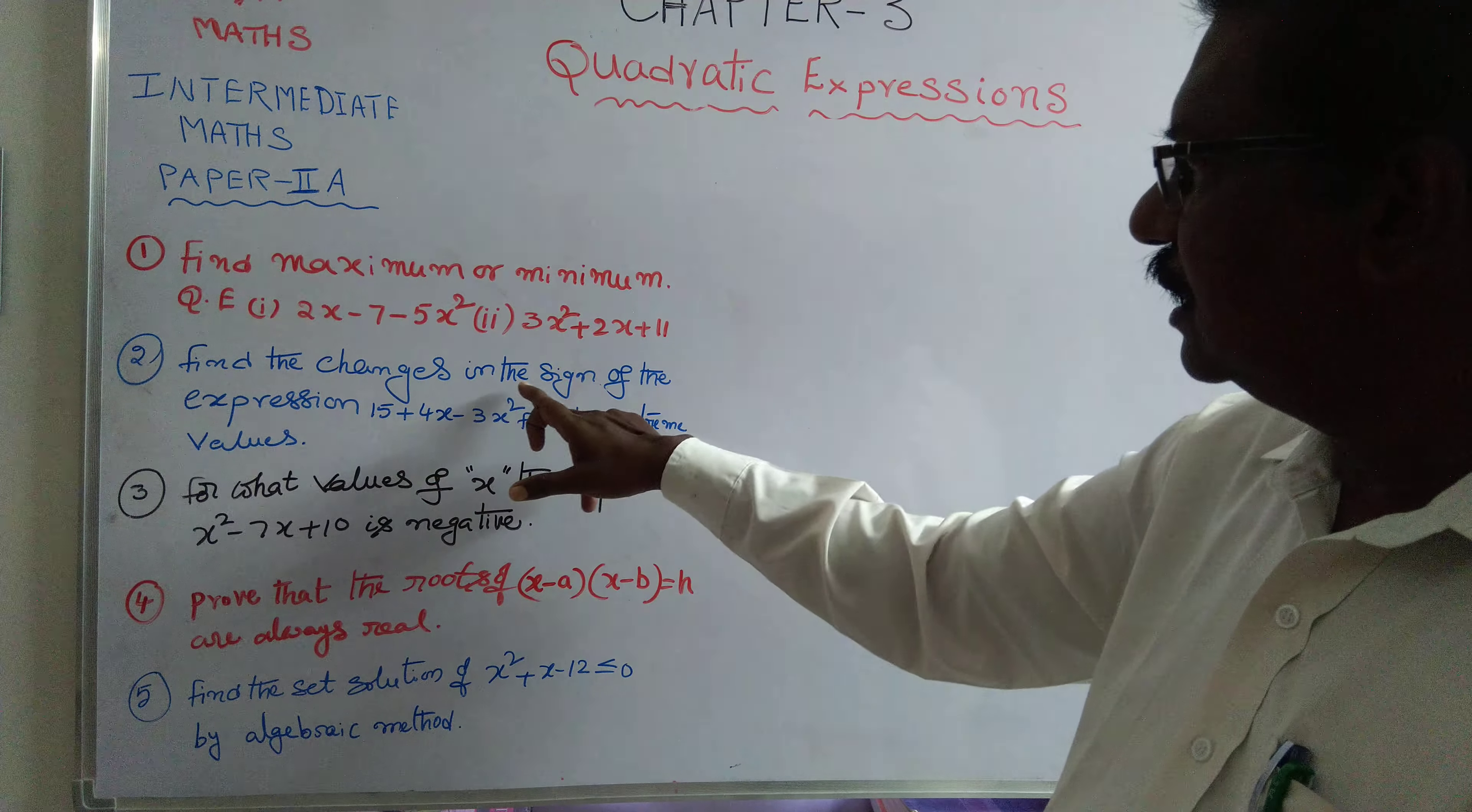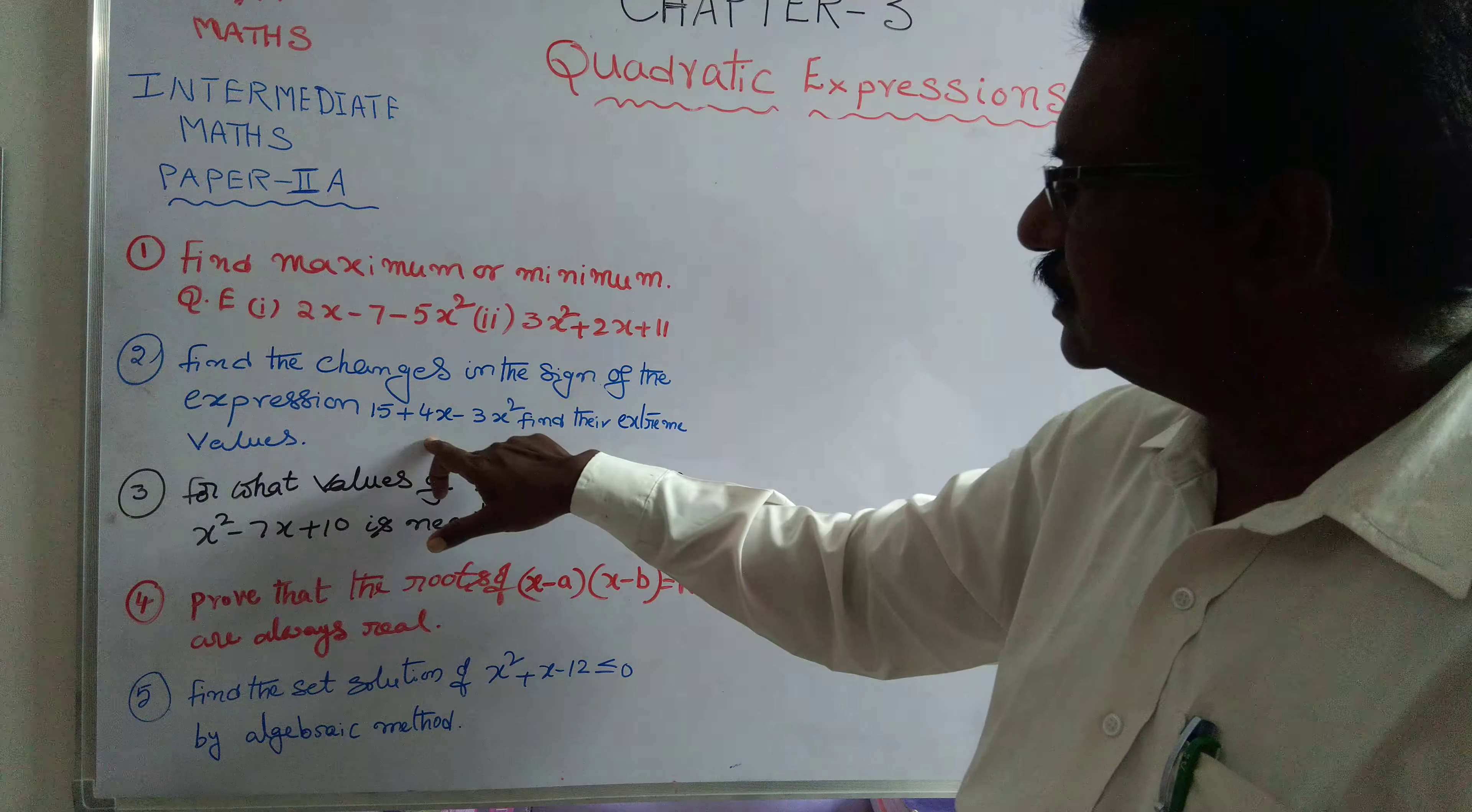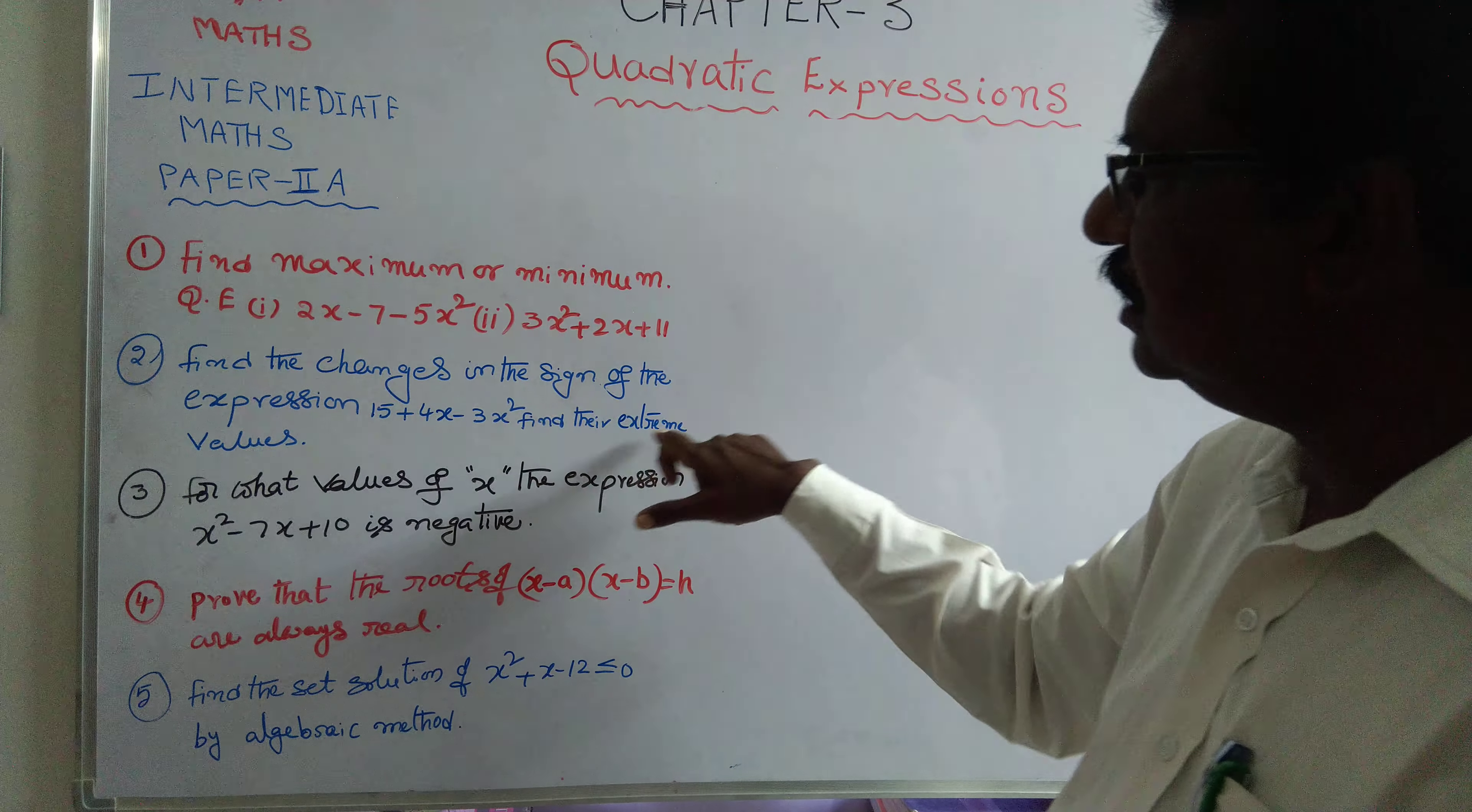Find the changes in the sign of the expression 15 plus 4x minus 3x squared. Find the extreme values.